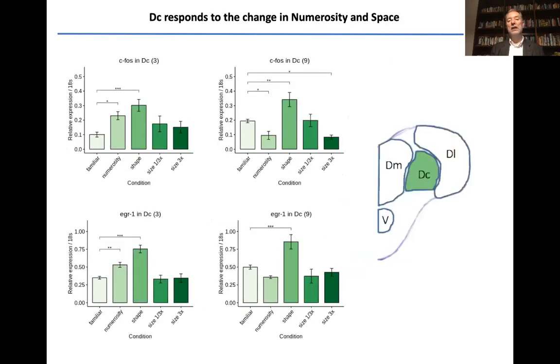But most interestingly, we found that in the DC there was a specific response to numerosity which was associated with the change. That is, those trained with three dots and presented then at the dishabituation phase with nine show an increase in c-Fos and EGR1.